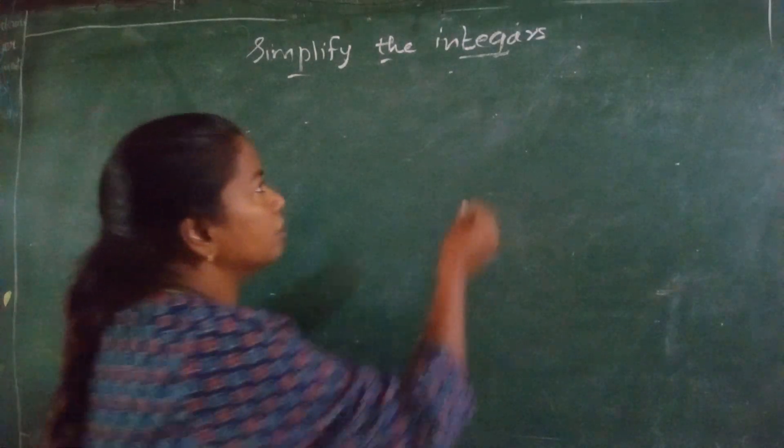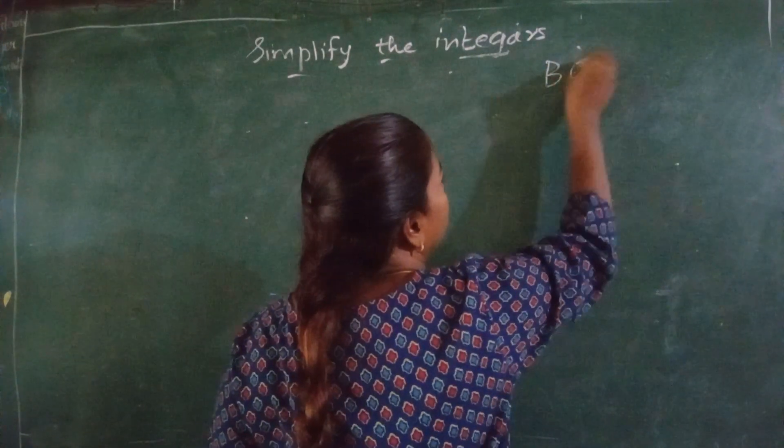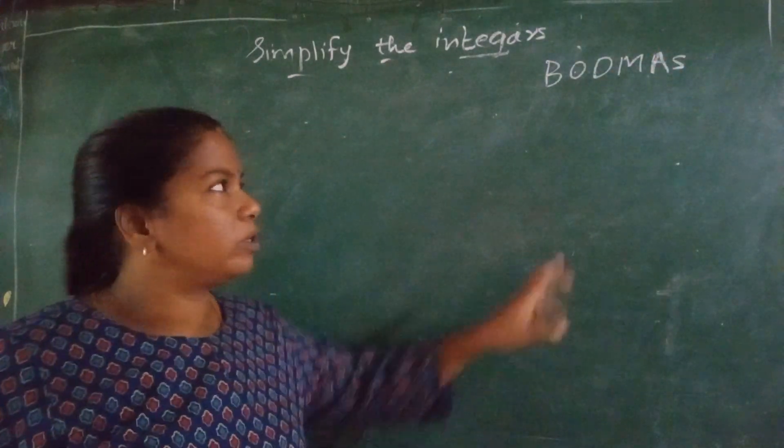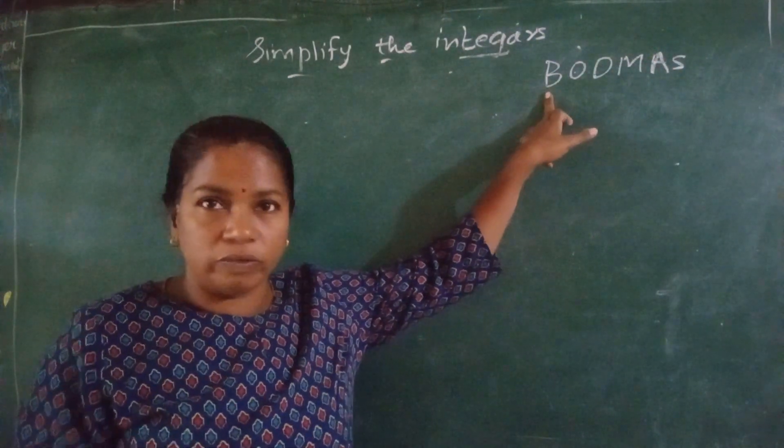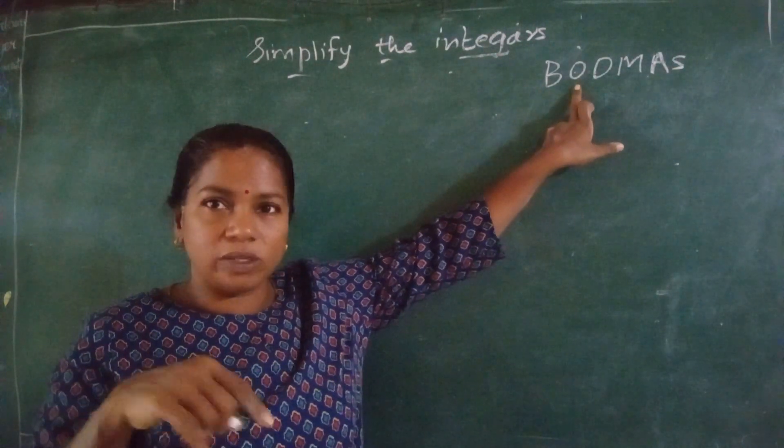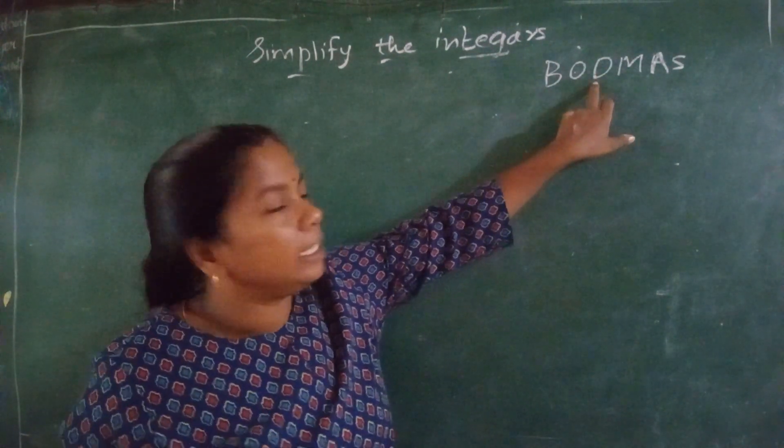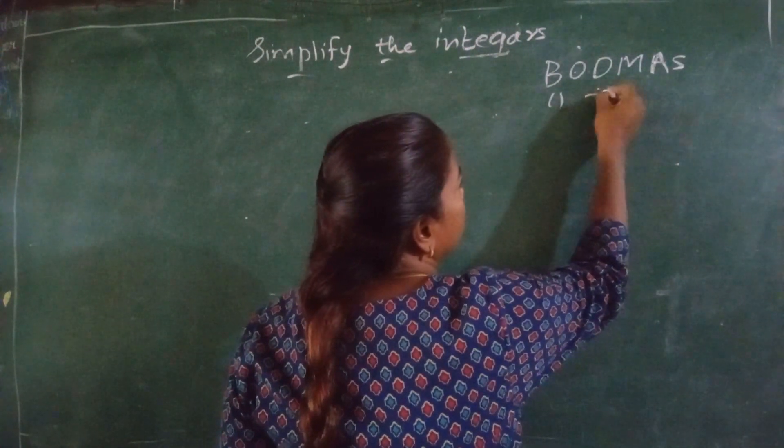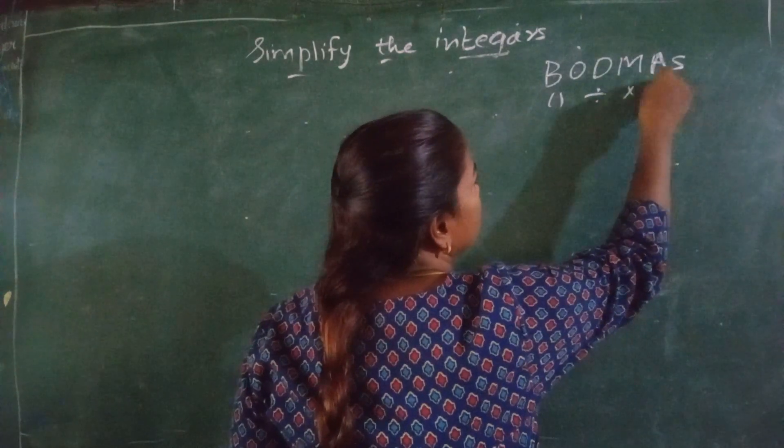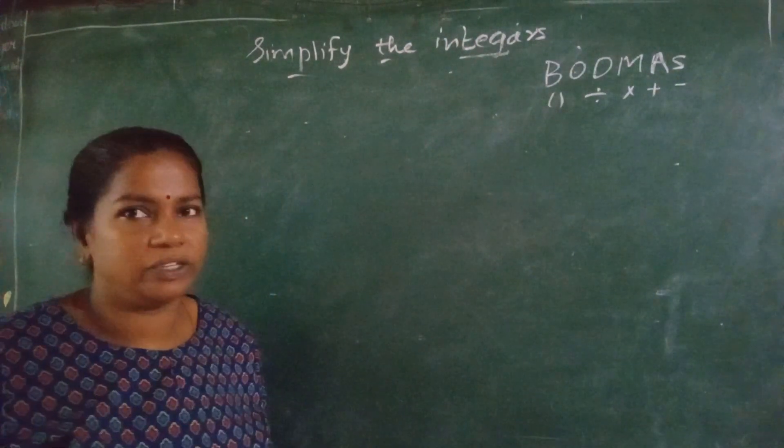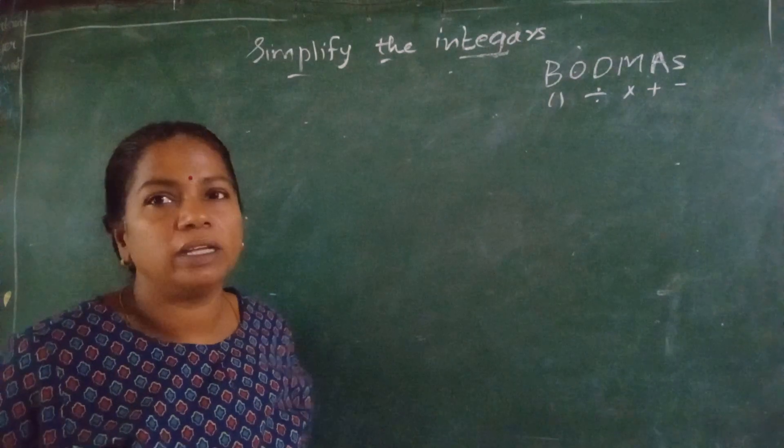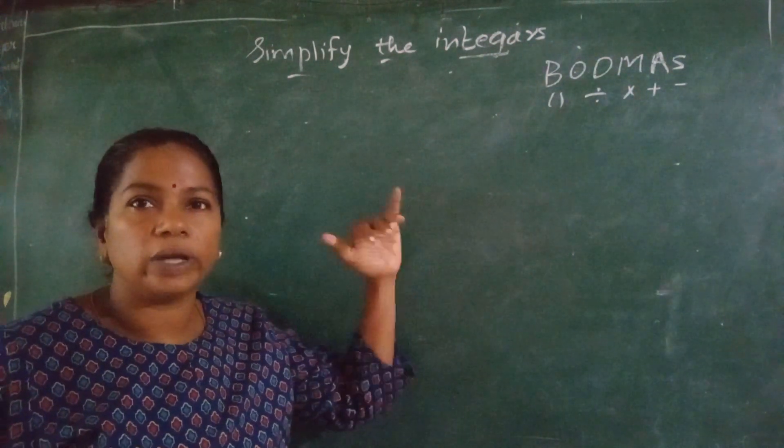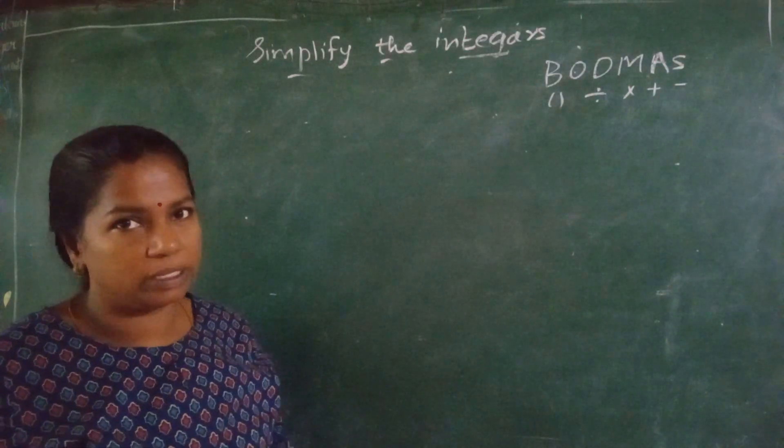Before that, let me revise the BODMAS rule. So BODMAS rule is what? If there is any bracket, first you will solve what is the number in the bracket. O is operations, you have to solve it. And then D stands for division. B for bracket, D for division, M for multiplication, A for addition and S for subtraction. So this is the rule, this is the procedure. You have to go according to this rule, step by step, and you have to solve the sums.